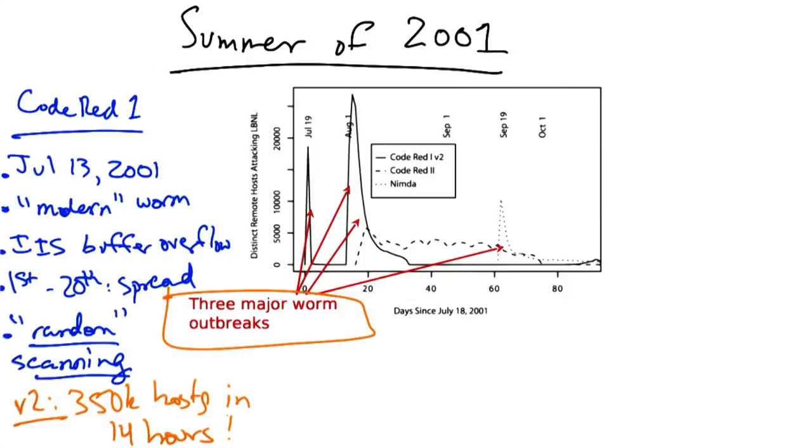By most estimates, that was the complete set of hosts running the vulnerable version of IIS on the entire internet. The payload of this worm was to mount a denial-of-service attack on whitehouse.gov.